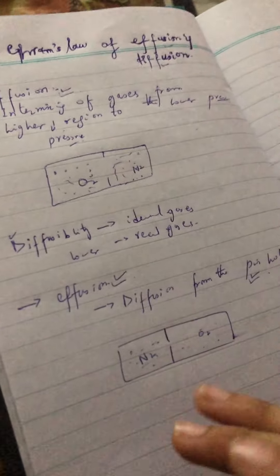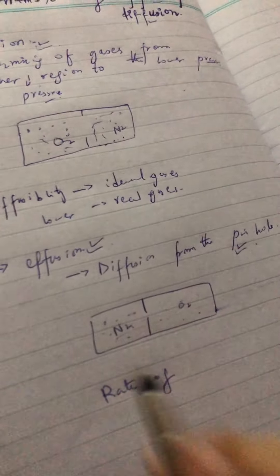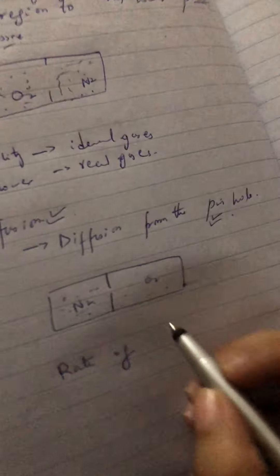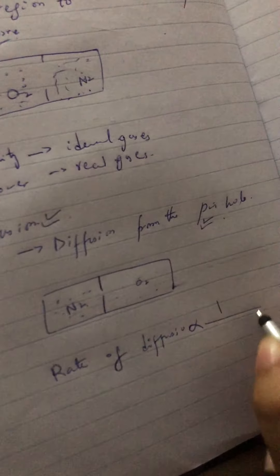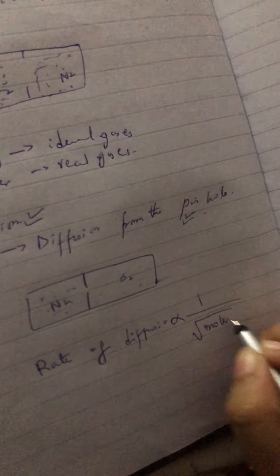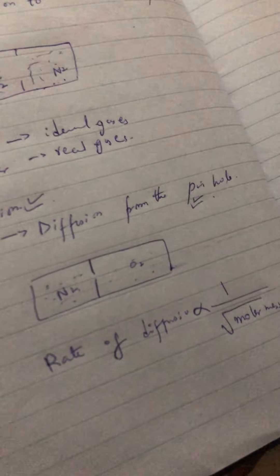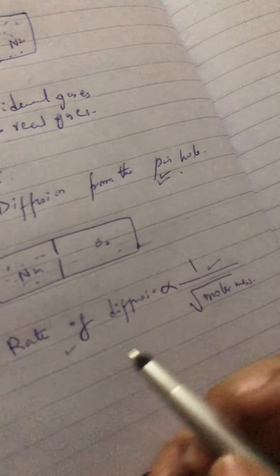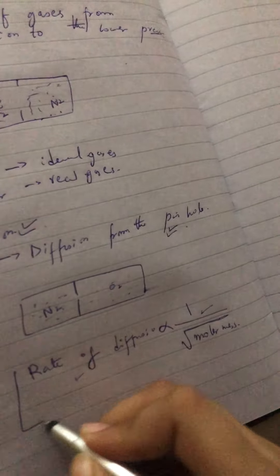Graham's Law was based on the rate of diffusion and effusion. He said that the rate of diffusion is inversely proportional to the square root of its molar mass. For any gas, the rate of diffusion is inversely proportional to the square root of its molar mass. This statement was given by Graham.